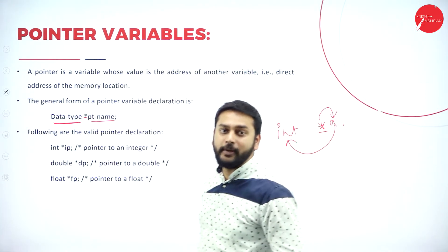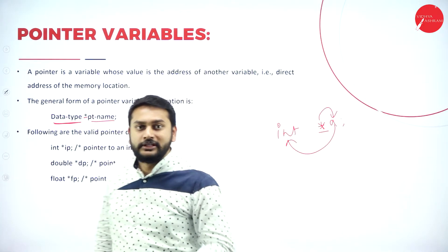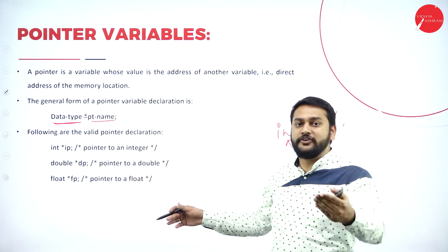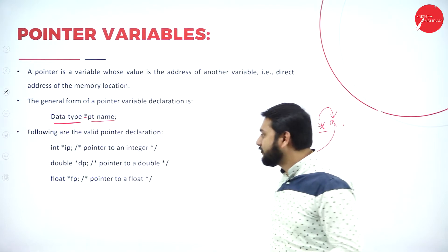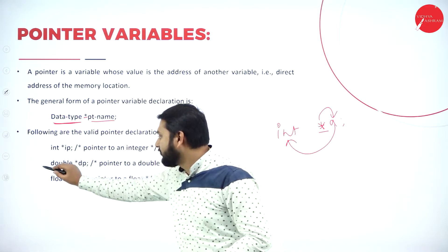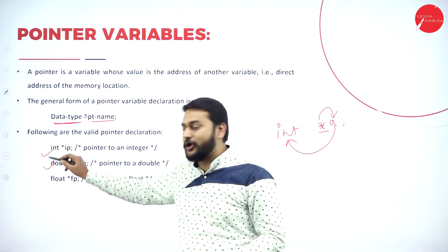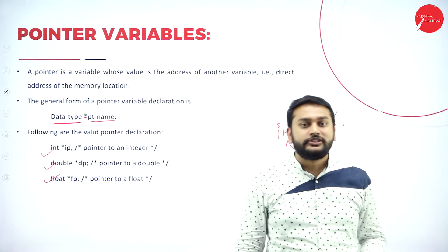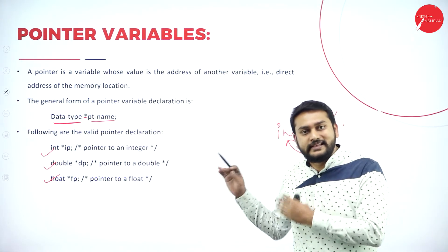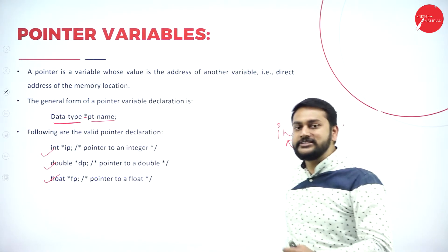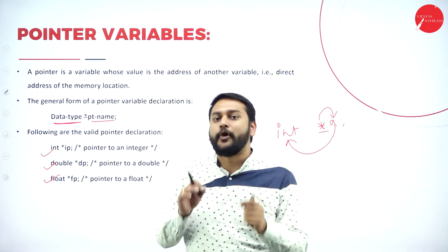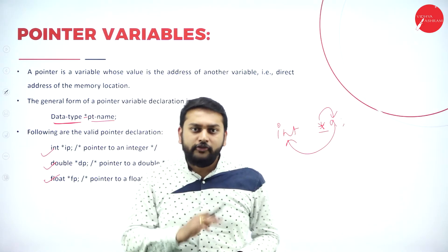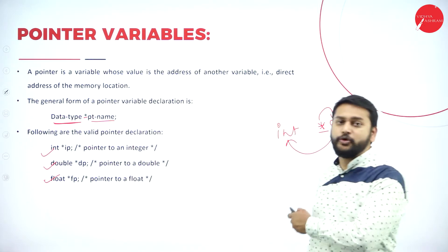I have shown examples with different data types: pointer for double, pointer for int, and pointer for float. This is the syntax to declare a pointer variable.